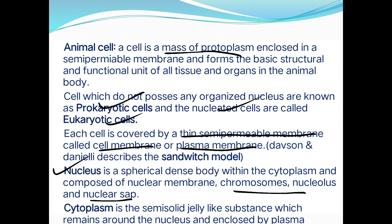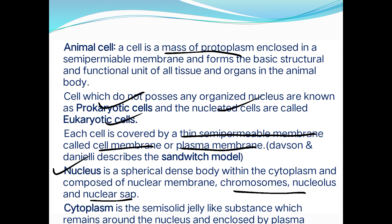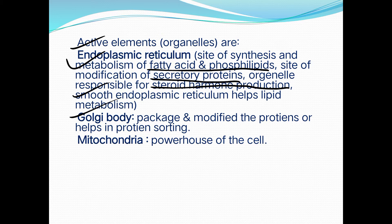The endoplasmic reticulum is used for fatty acid metabolism, phospholipid metabolism and synthesis, modification of secretory proteins, and steroid hormone production. Many hormones are steroid in nature and are produced with the help of this organelle. Smooth endoplasmic reticulum controls lipid metabolism.